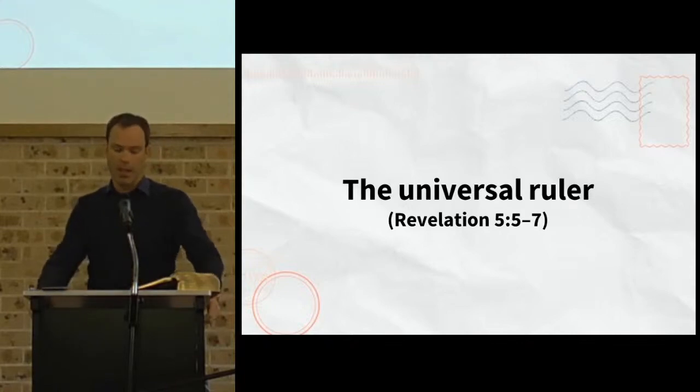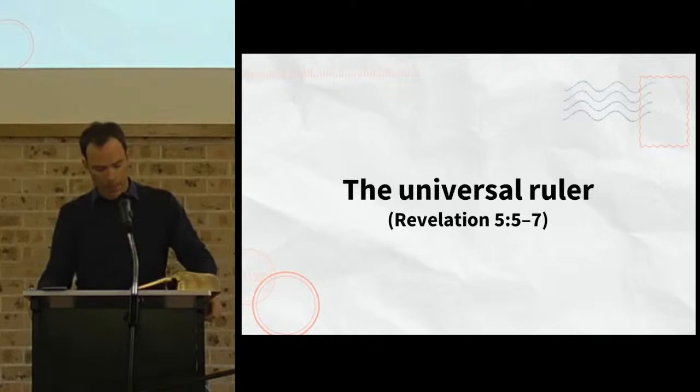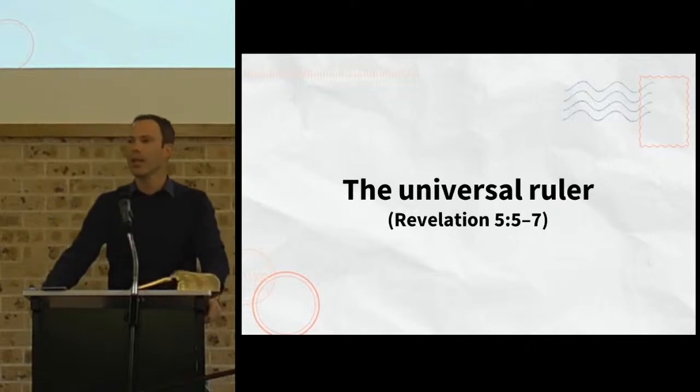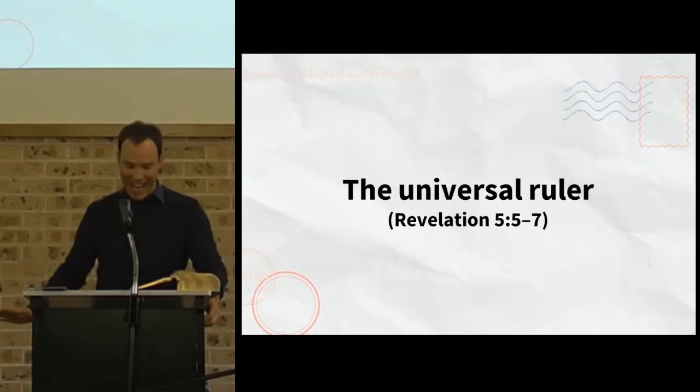But what does he say instead? Verse 6: Then I saw a lamb looking as if it had been slain, standing at the center of the throne, encircled by the four living creatures and the elders. Instead of a victorious warrior, there's a sacrificed animal, a lamb, not even a sheep, a lamb, one who looks as if slain and ready for the altar.